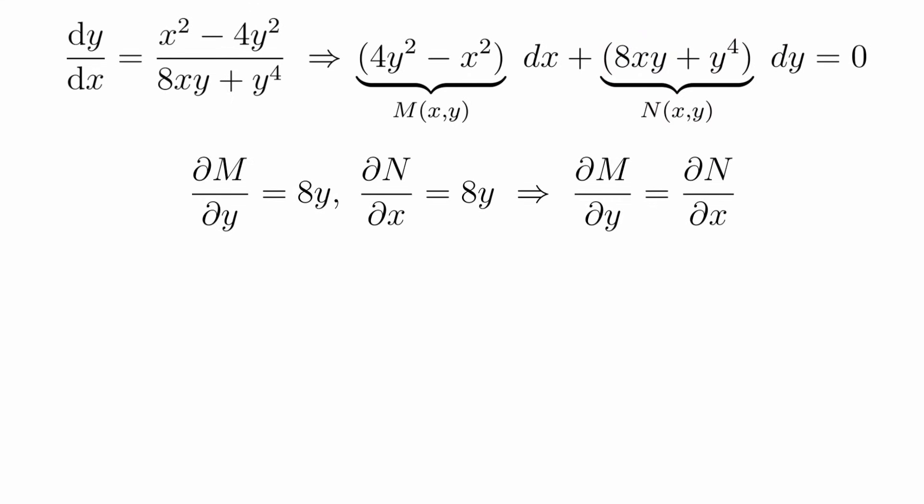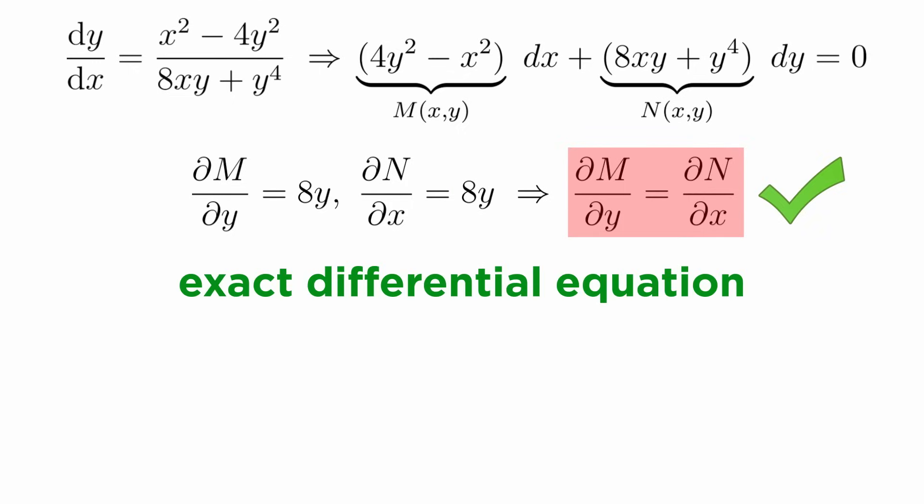Now we check for exactness. The partial derivative of M with respect to y is 8y, and the partial derivative of N with respect to x is 8y. Since the partials are equal, we have an exact differential equation.